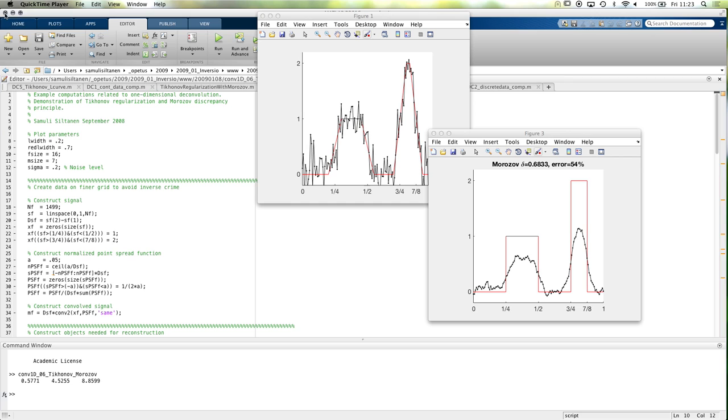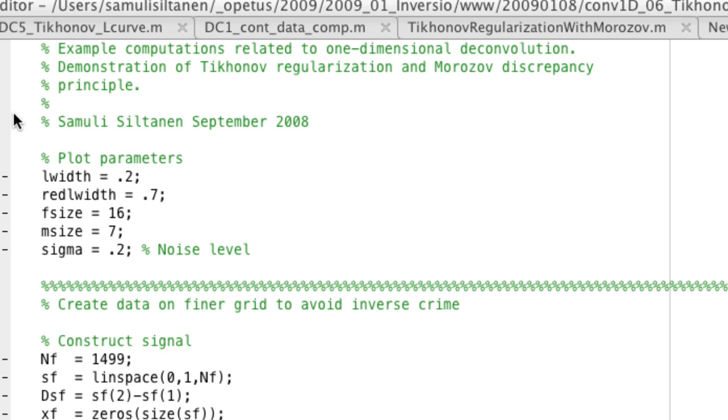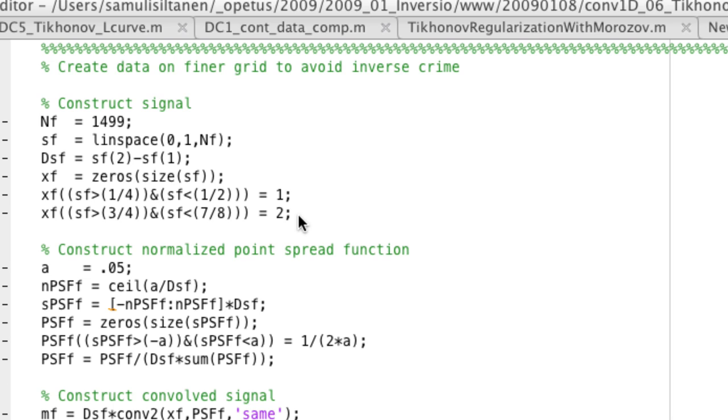Okay, so let's continue our Morozov explanation. So what happens in this Morozov code? So this is an old code where I've had in the same M-file everything. Not the best programming style, maybe I got some feedback on that. But anyway, it's all here.